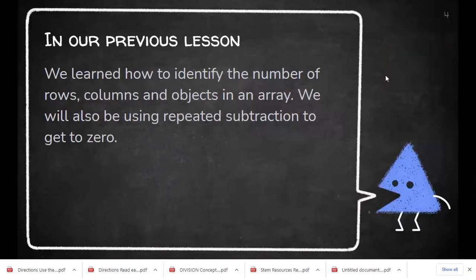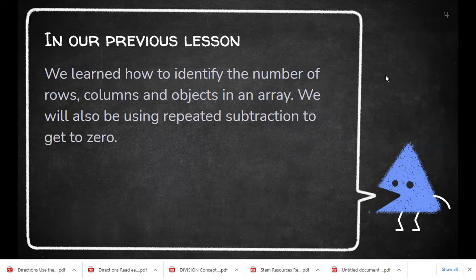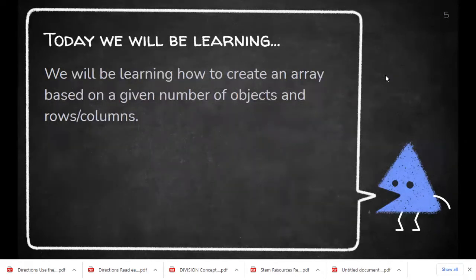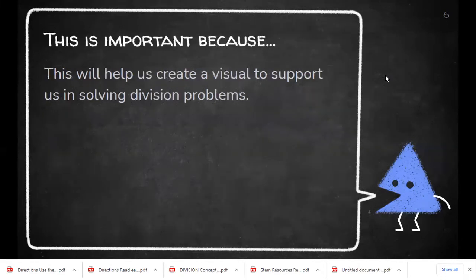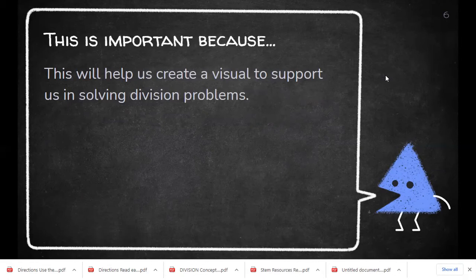All right, friends. So in our previous lesson, we learned how to identify the number of rows, columns, and objects in an array. We also used repeated subtraction to get to zero. Today, we're going to be learning how to create an array based on the given number of objects in rows or columns. This is important because this will help us create a visual to support us in solving division problems.